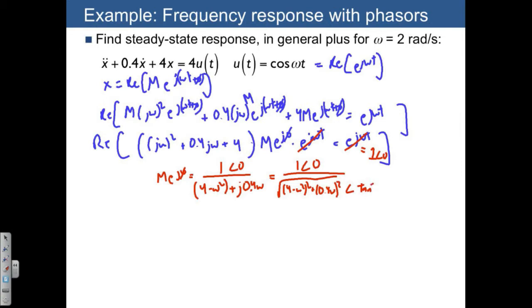So this still sits inside the real part, but the idea is that there's only one way to satisfy this for any time, and that is if this equality is true for both the real and the imaginary parts. So that means that we don't even need to write the real part anymore, we can drop that.